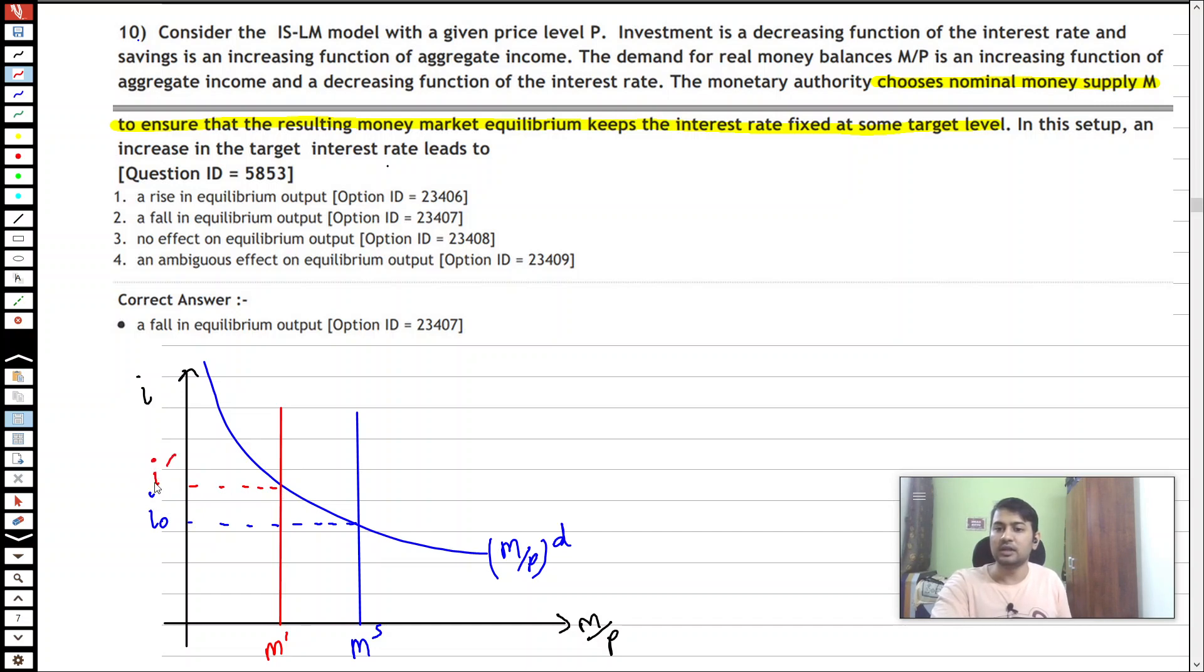What happens is that interest rises to I prime. So in order to do this, what the monetary authority needs to do is to reduce money supply.